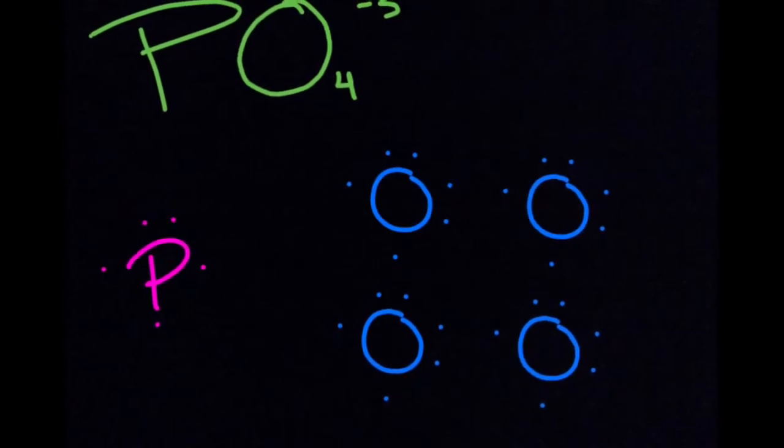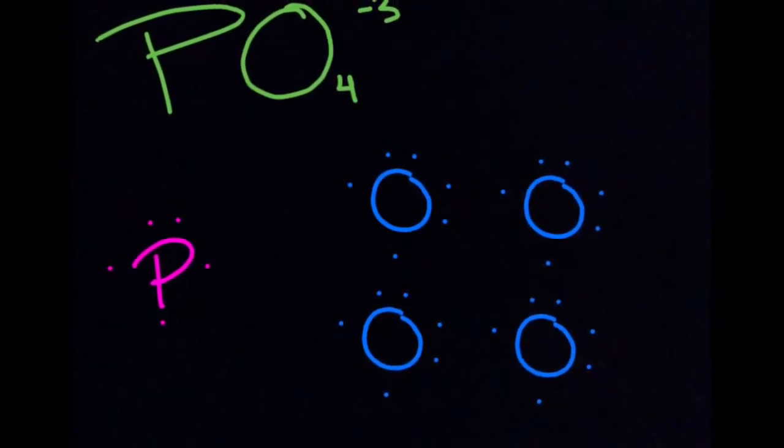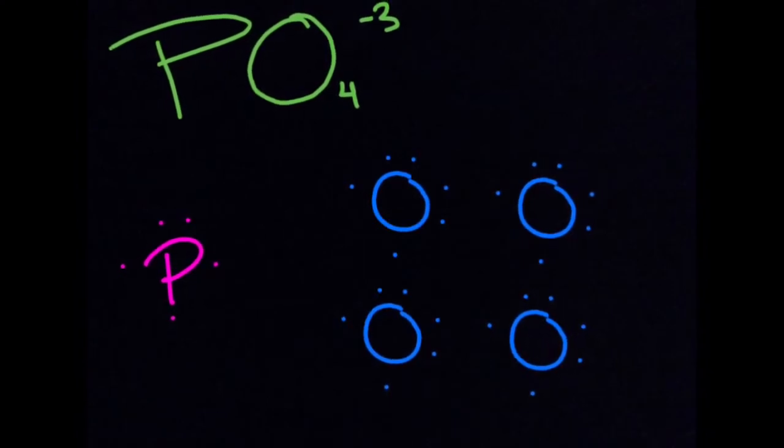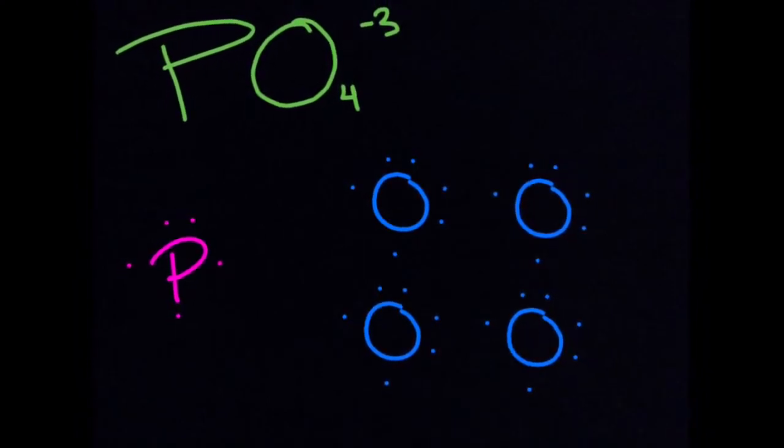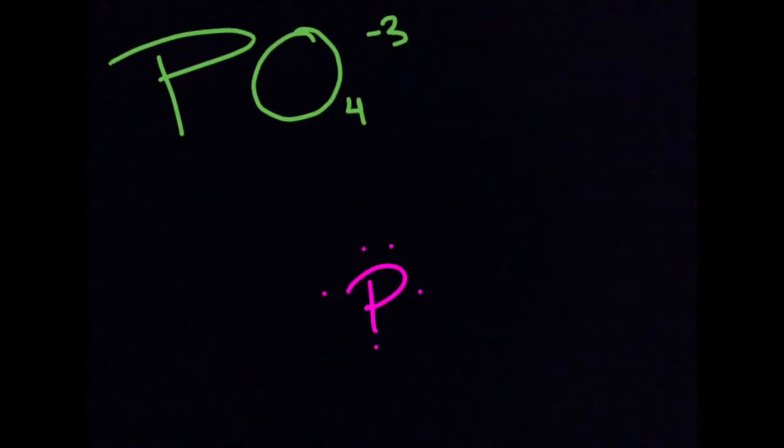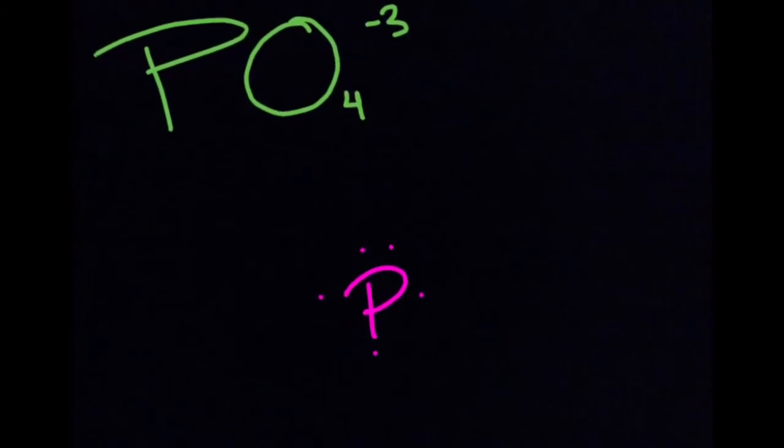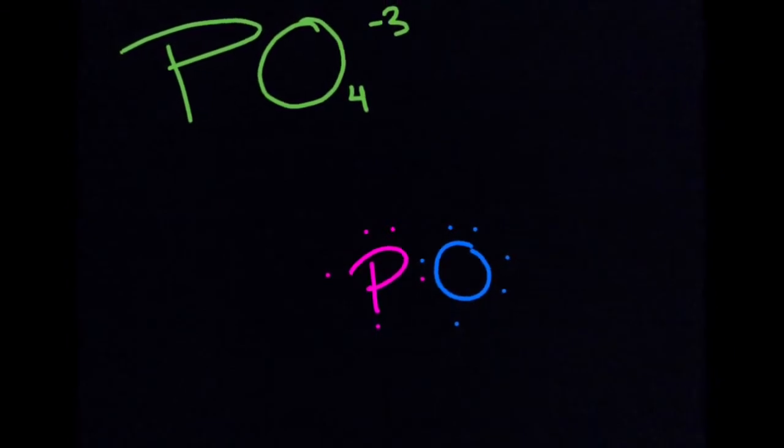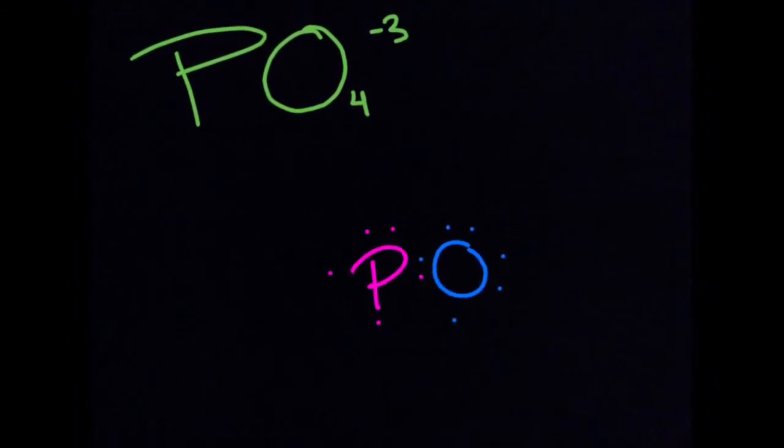As you can see, there are 27 valence electrons. If you divide this by two, you aren't going to get a whole number, and you can't get half bonds. This will be addressed later. First, you are going to start with phosphorus, which has five valence electrons.